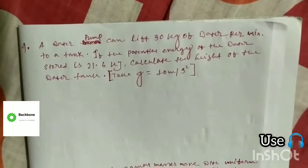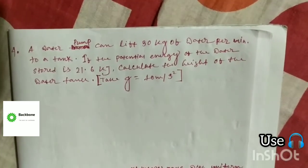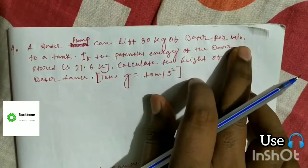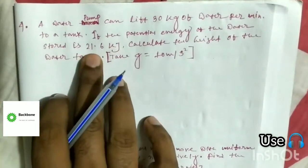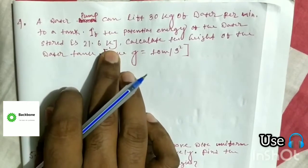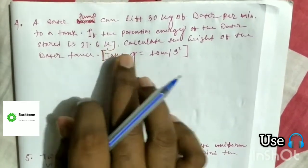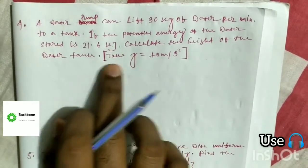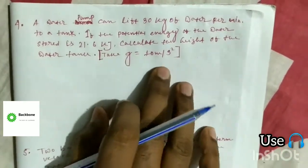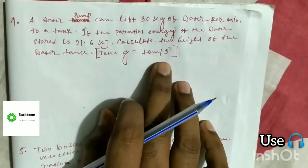Problem 4: A water pump can lift 30 kg of water per minute to a tank. If the potential energy of the water stored is 21.6 kJ, calculate the height of the water tank. Here take G, gravitational acceleration, is equal to 10 meters per second squared.